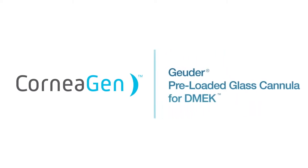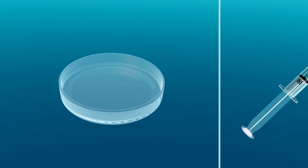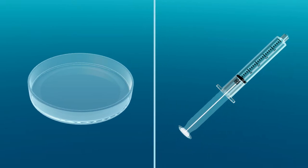Welcome to the instructional video for the Geuder preloaded glass cannula for DMEK. In addition to the preloaded cannula, you will need a sterile shallow petri dish filled with balanced salt solution BSS and one 5cc syringe filled with BSS available for use during the technique.